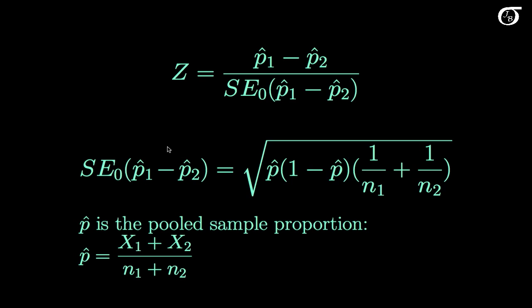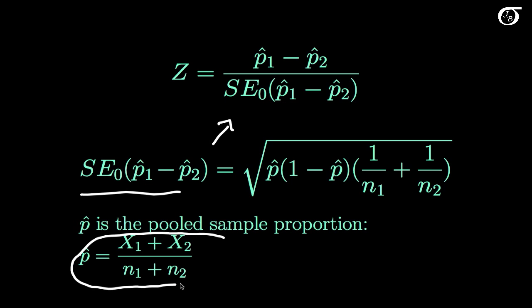The actual formula for the standard error in the denominator of our test statistic is the square root of p̂ times (1 minus p̂) times (1/n₁ plus 1/n₂), where p̂ is the pooled sample proportion — ignoring the fact that we have two groups and lumping everybody together to find the proportion across our entire two samples combined.